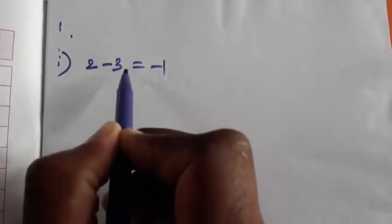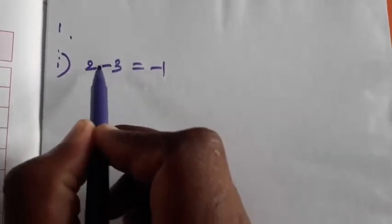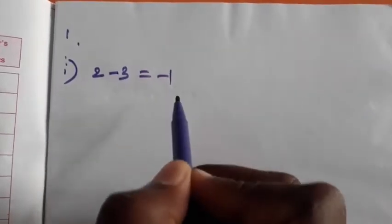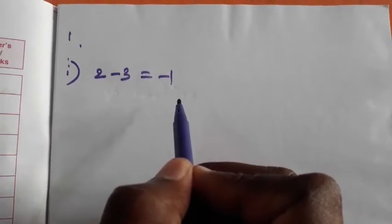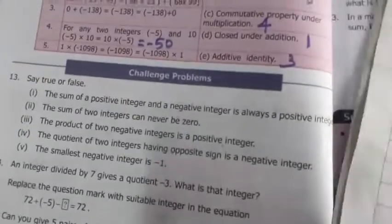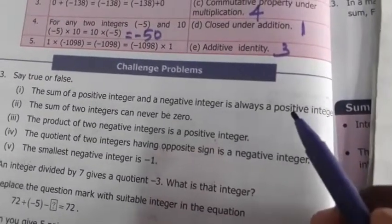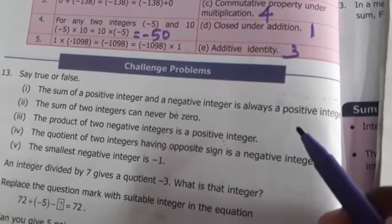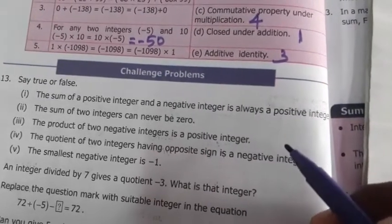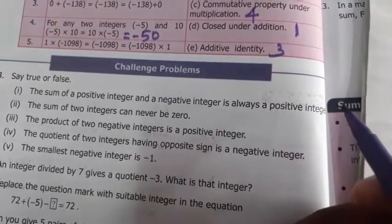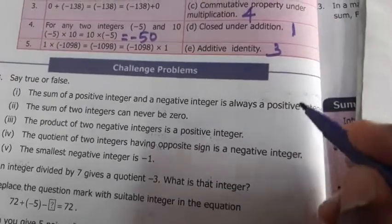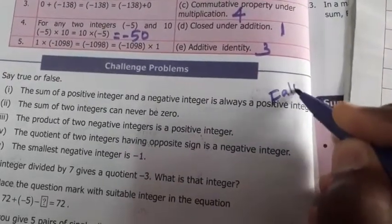With opposite signs, we take the greater number's sign — three is greater, and its sign is minus — so the answer is minus one. But the statement says the sum is always a positive integer. Here we got a negative result, so the answer is false.